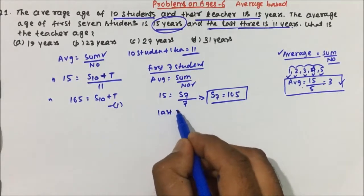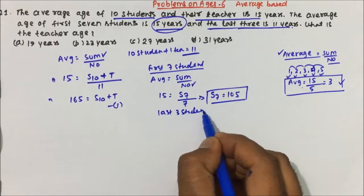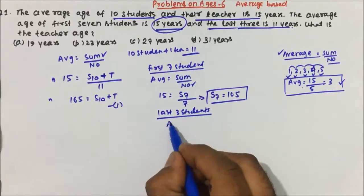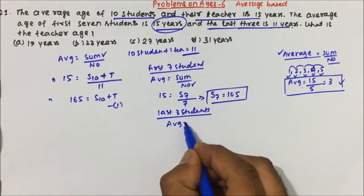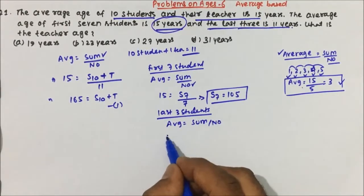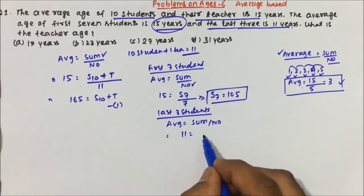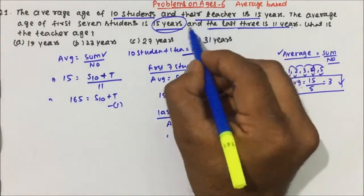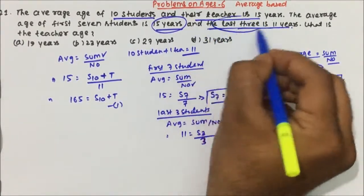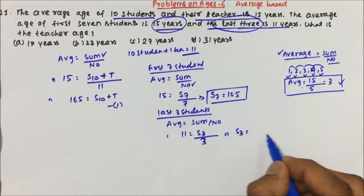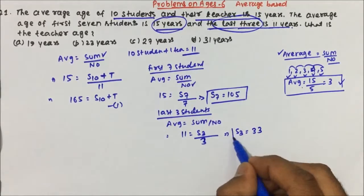The last 3 students' average is 11 years. Average = sum / number. Average is 11, sum is the ages of 3 students, divided by 3. So the sum of ages of the last 3 students = 11 × 3 = 33.